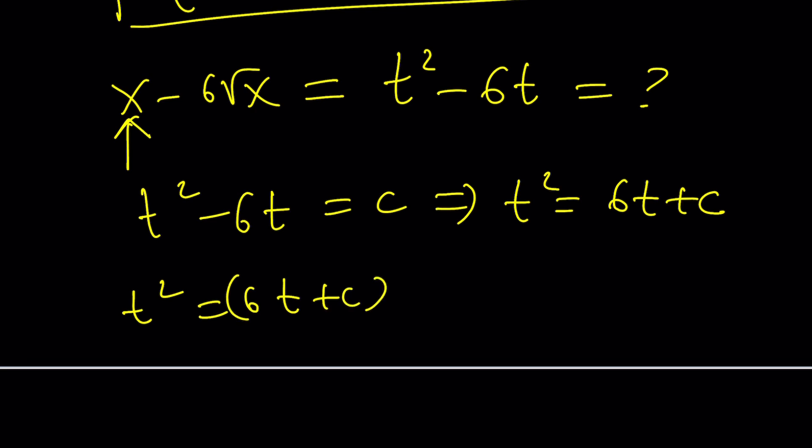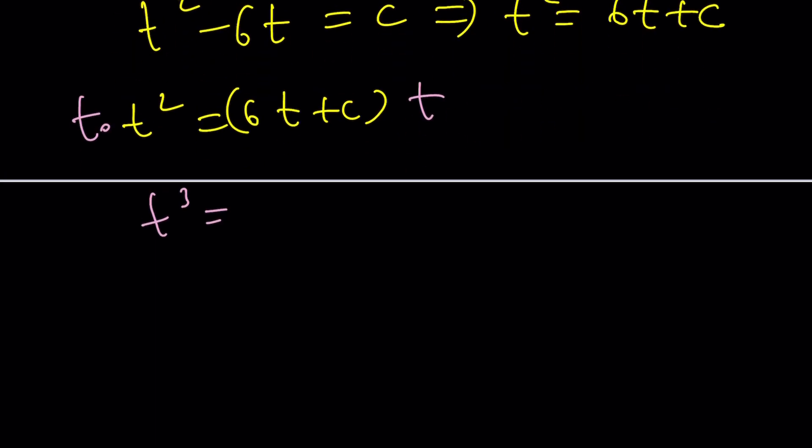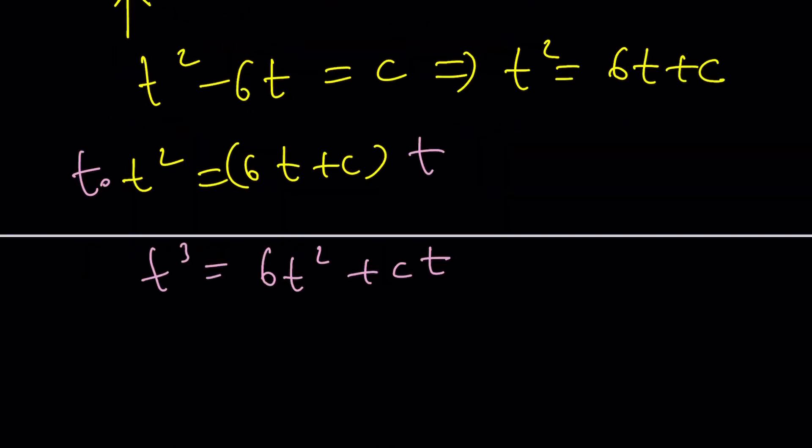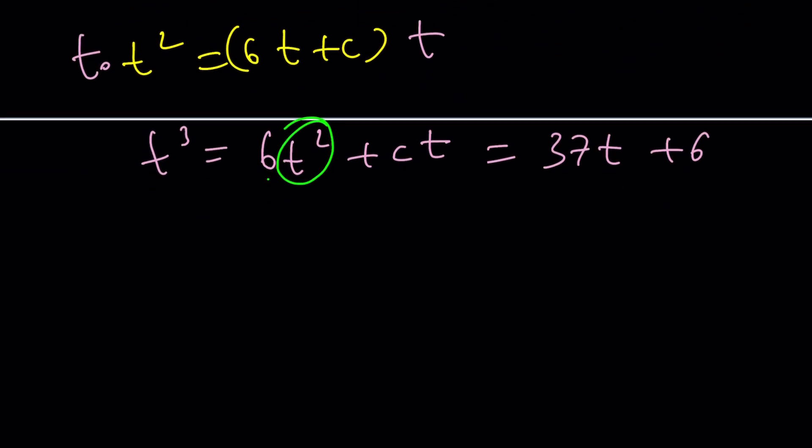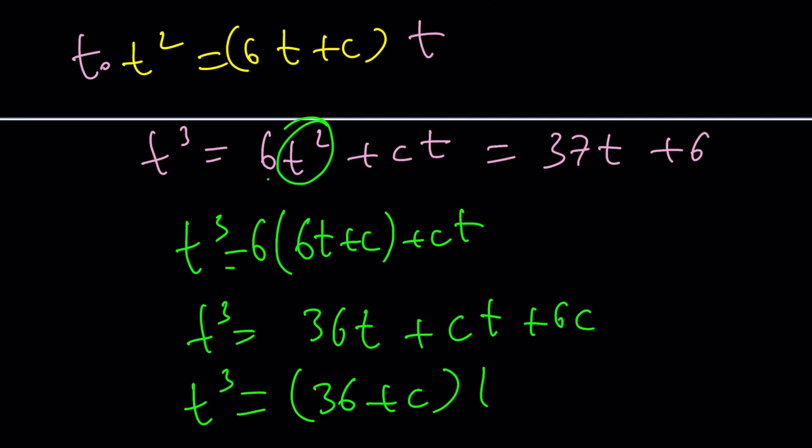And from here, we get t squared is 6t plus c. So t squared equals 6t plus c. Let's go ahead and multiply both sides by t. And that's going to give us t cubed equals 6t squared plus ct. Okay? Now, remember, t cubed from here is equal to that, 37t plus 6. So this should be 37t plus 6 for all values of t. You know, I mean, not for all values of t, but for certain values of t, whatever. But this comparison tells us, uh-oh, wait a minute, we forgot something. Okay. Here's what I realized. Yes. Here's what we need. We can replace t squared with this one more time. 6t plus c. 6 times 6t plus c plus ct. And that gives us t cubed equals 36t plus 6c plus ct. Or we could do it as follows: ct plus 6c. And then t cubed is going to be 36 plus c times the quantity t plus 6c.